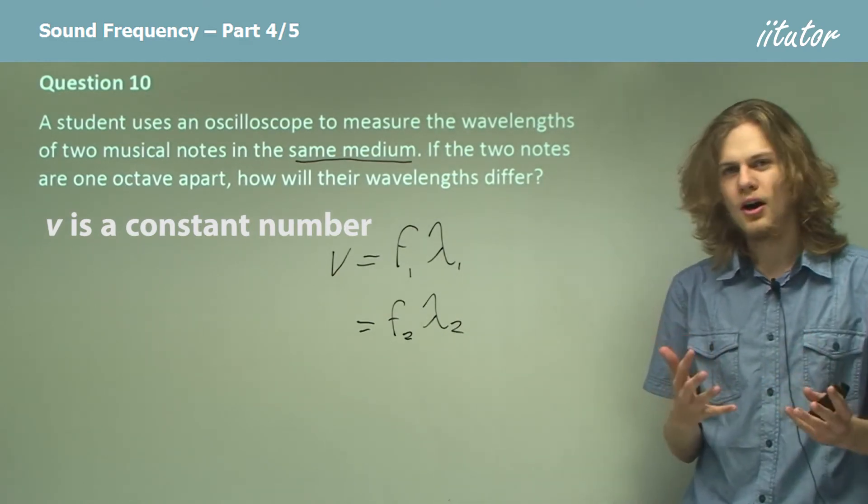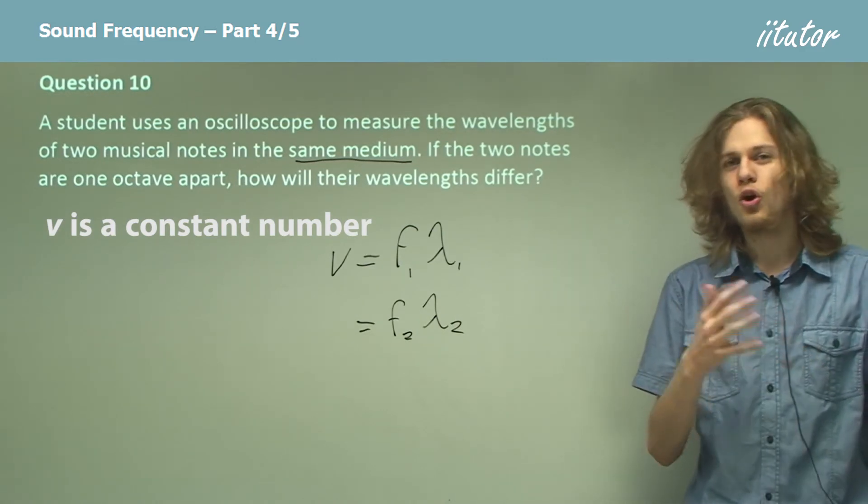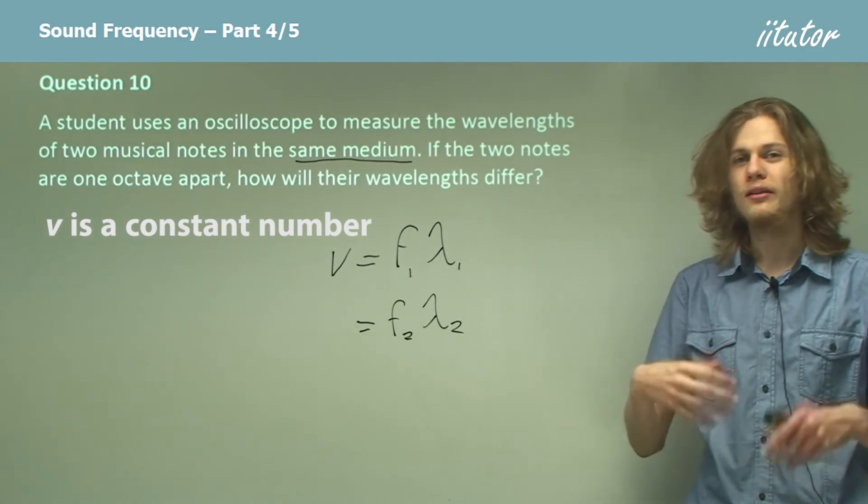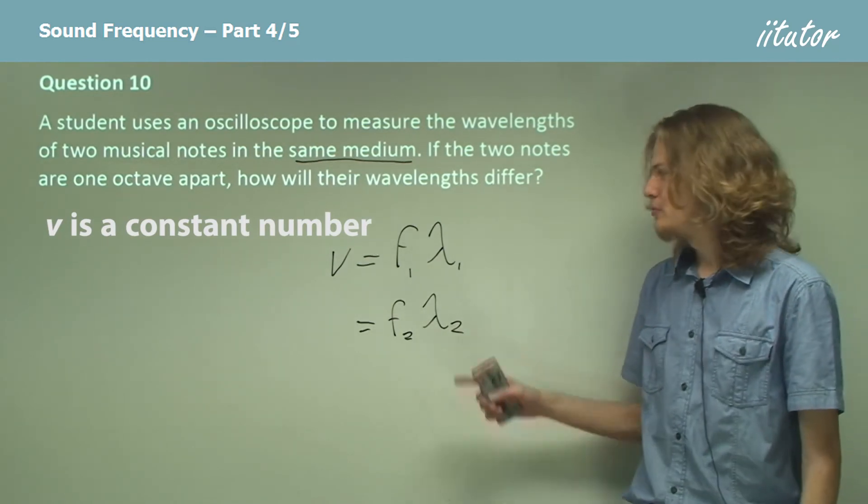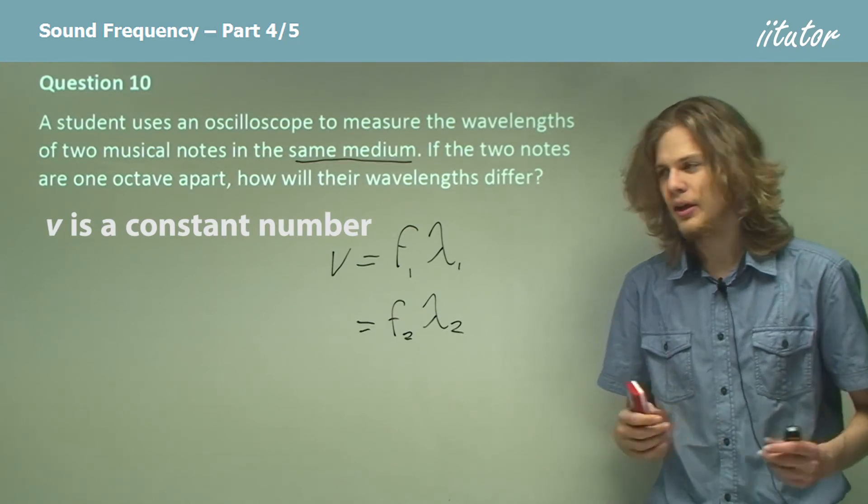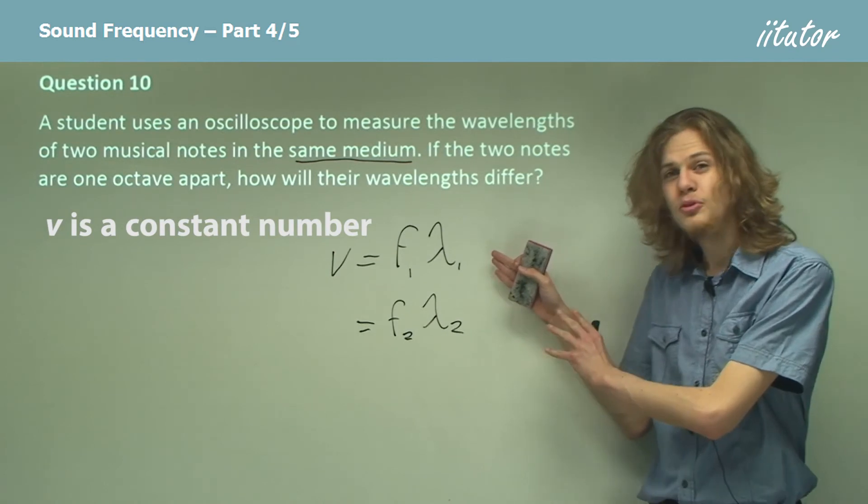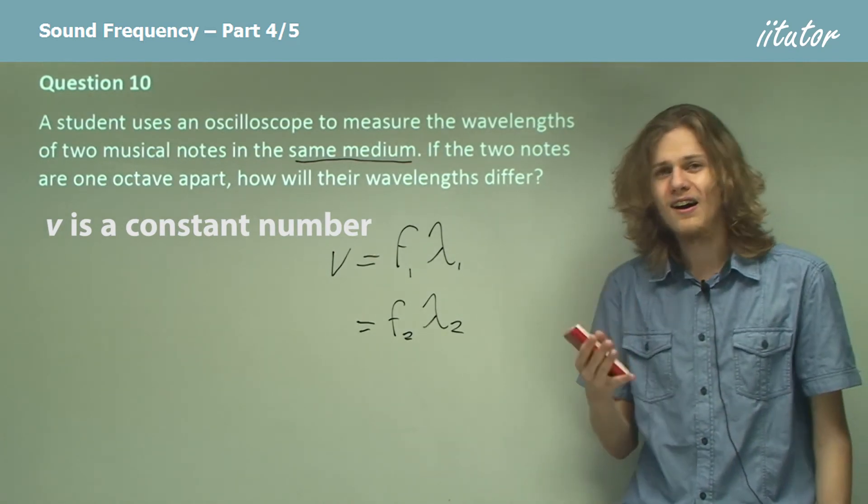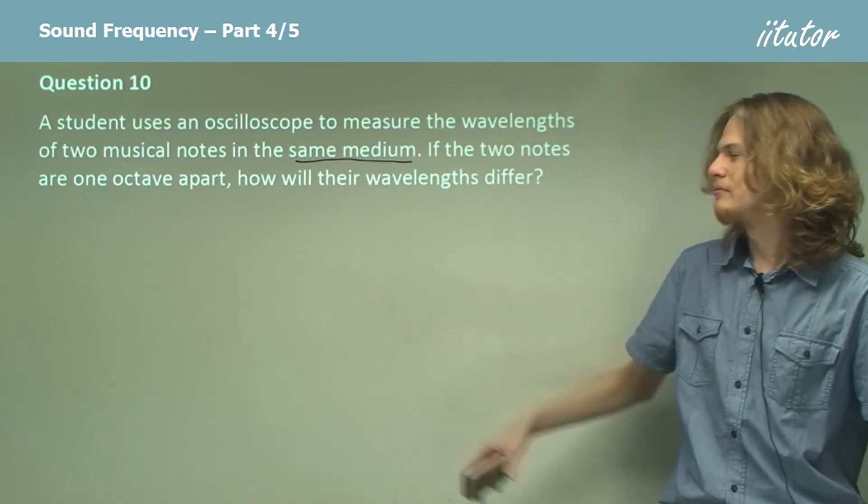If the two notes are one octave apart, how will that change their wavelengths? Well we know that a difference of one octave corresponds to a frequency doubling or halving if we're going back the other way. And so if F1 for example is double F2, but we know that this condition has to hold true, then we can see that lambda 1 will need to be half of lambda 2 in order to keep the equation correct.